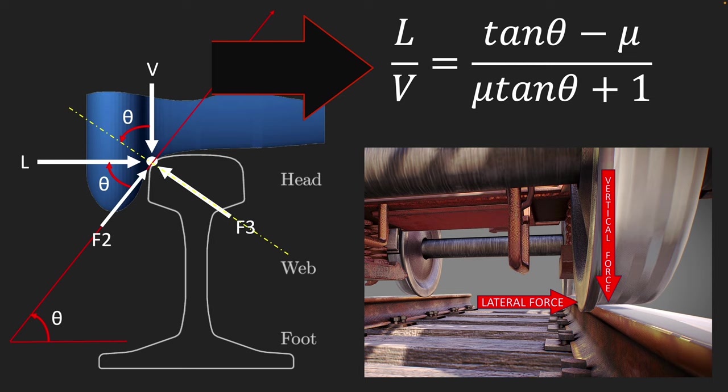So now that is the Nadal formula or Nadal ratio, also called L over V ratio, also called Y over Q ratio, also called derailment ratio. That's what it looks like.